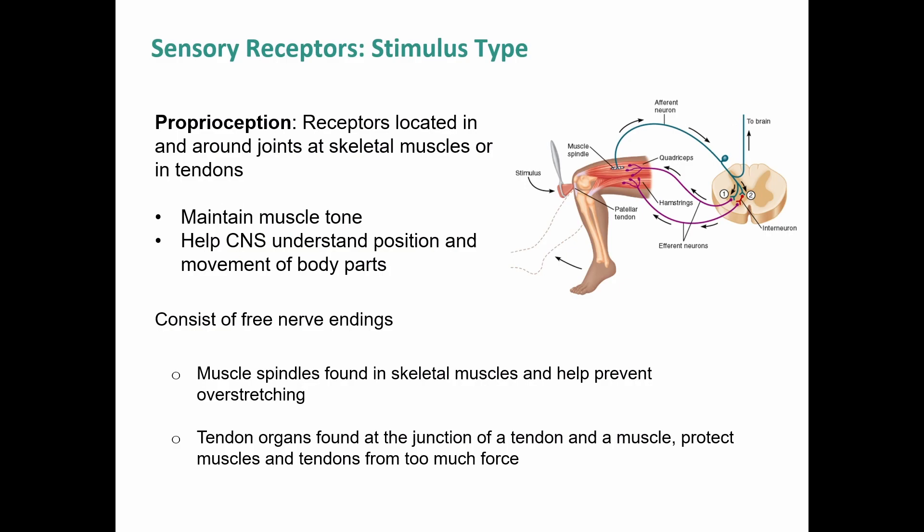Proprioception uses receptors in joints, skeletal muscles, and tendons to help the central nervous system understand body position and movement, and also helps maintain muscle tone through tiny contractions. This consists of free nerve endings found in muscle spindles within skeletal muscles to prevent overstretching, and tendon organs at the muscle-tendon junction to prevent too much force being applied and damaging that junction.